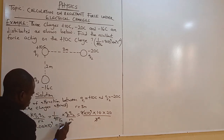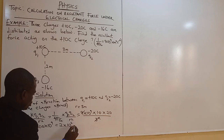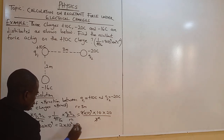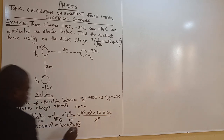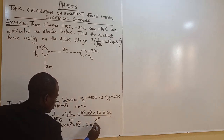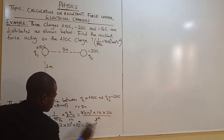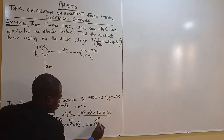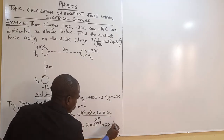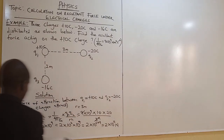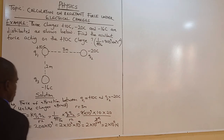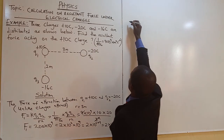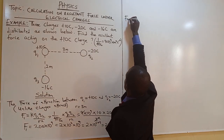Shifting the indices: 200 times 10 to the power 9 is 2 times 10 squared times 10 to the power 9, which using index laws gives 2 times 10 to the power 11 Newtons. Let's call this F1, the force of attraction.